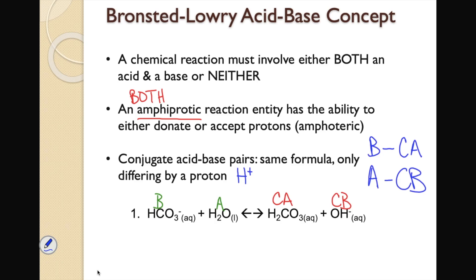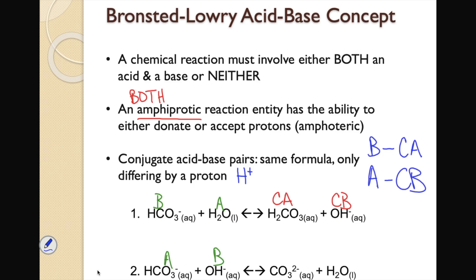In the second reaction — where HCO₃⁻ was the acid and OH⁻ was the base — HCO₃⁻ pairs with CO₃²⁻, so CO₃²⁻ is the conjugate base. OH⁻ and H₂O are the other pair — hydroxide is the base, so water is the conjugate acid. In an acid-base reaction viewed through Bronsted-Lowry, reactants are an acid and a base; products are the conjugate acid and conjugate base.